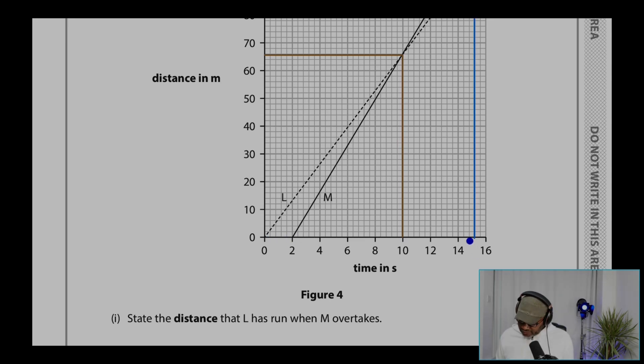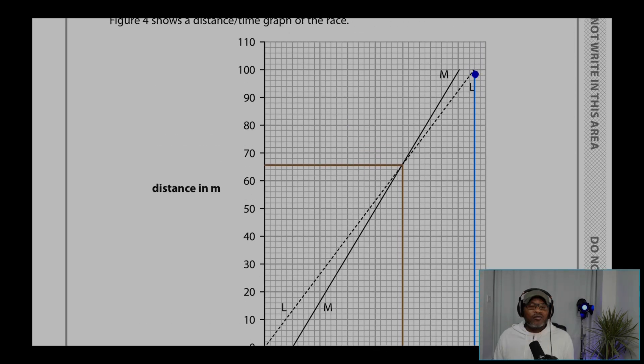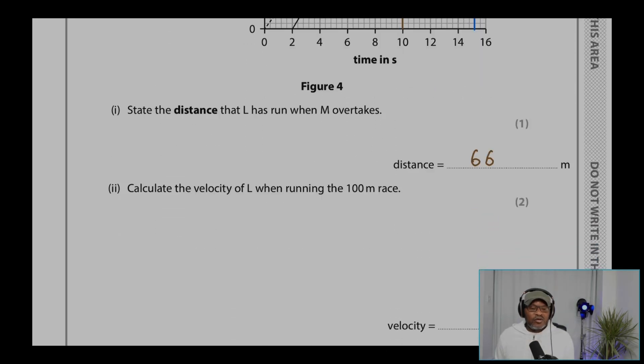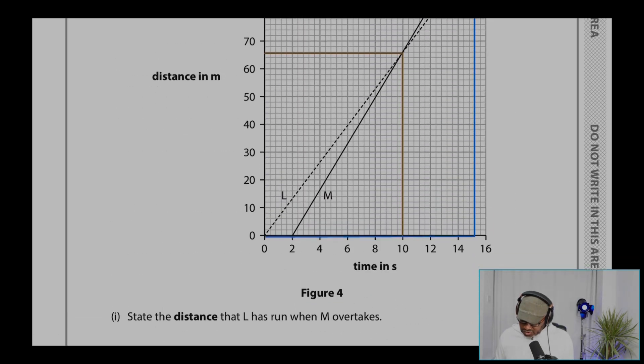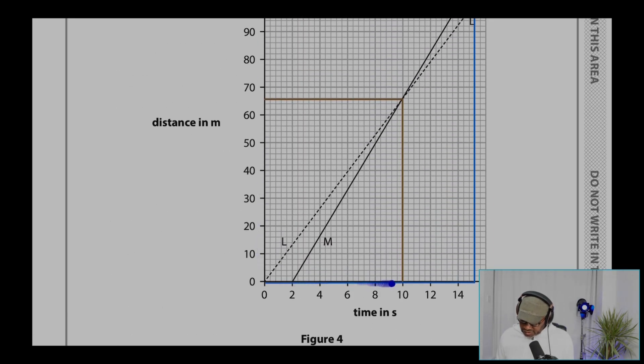So the time is 15, and that's 14, 16, that's 15.2 roughly at 100 meters. So we can write the gradient there because the velocity is the change in distance over time.